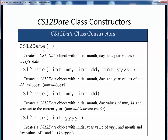You can create a new CS12Date object using month, day, and year, or month and day of the current year, or January 1st of the current year, or even nothing at all, which will default to today's date. Constructors are methods which have the exact same name as their class, and they're used to bring new object instances into being, which we call instantiating new objects.